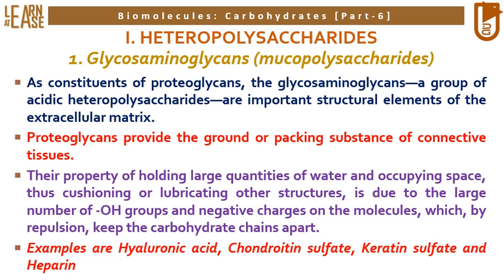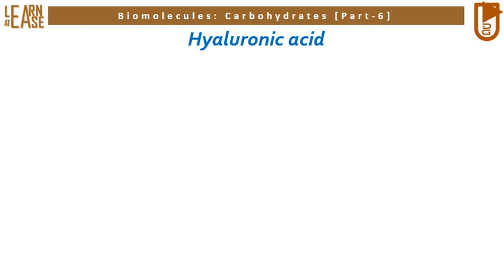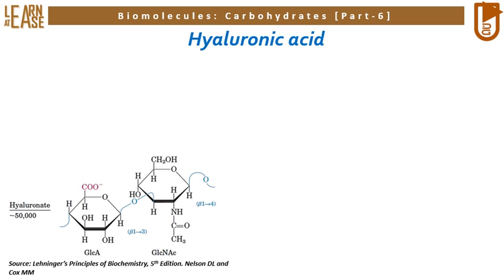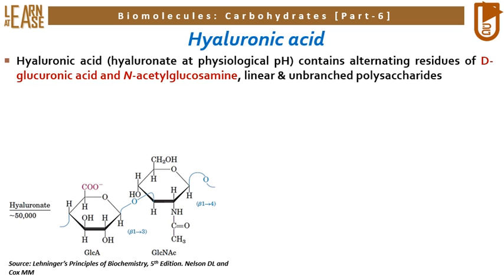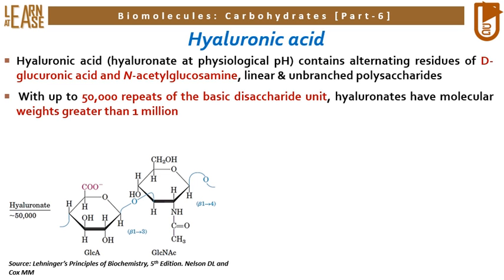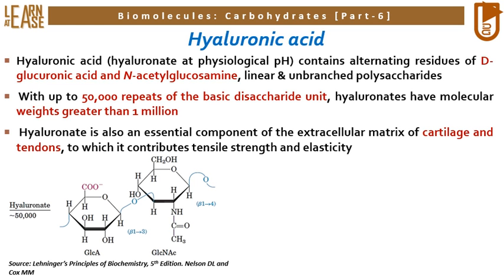Examples of glycosaminoglycans are hyaluronic acid, chondroitin sulfate, keratan sulfate, and heparin. Hyaluronic acid contains alternating residues of D-glucuronic acid and N-acetylglucosamine; it is a linear and unbranched polysaccharide with up to 50,000 repeats of the basic disaccharide unit, and hyaluronates have molecular weights greater than 1 million. Hyaluronate is also an essential component of the extracellular matrix of cartilage and tendons, to which it contributes tensile strength and elasticity.